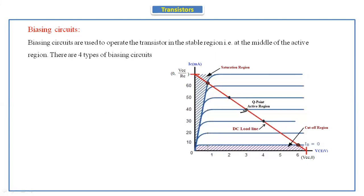The transistor should always operate at the middle of the active region — only then we can say that the transistor is in stable condition. Because of some reasons, the operating point is shifting upwards or downwards. We have to keep the operating point at the middle using biasing circuits. If it deviates from the middle, we use four biasing techniques to maintain the operating point at the middle.